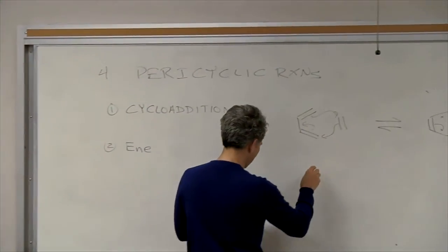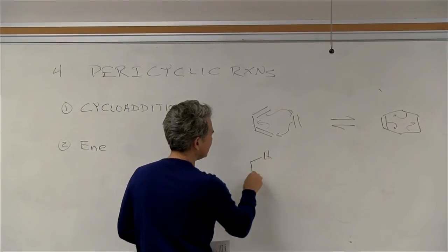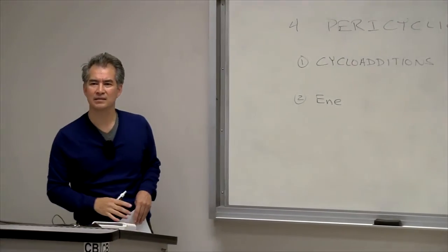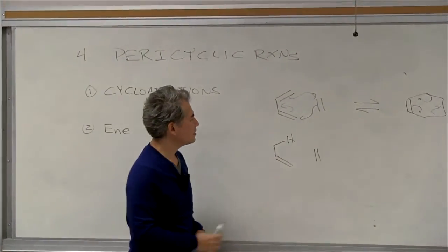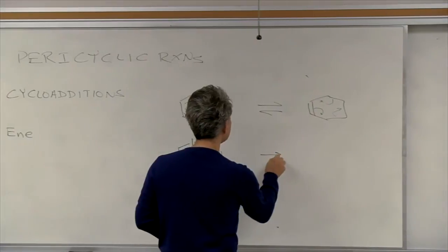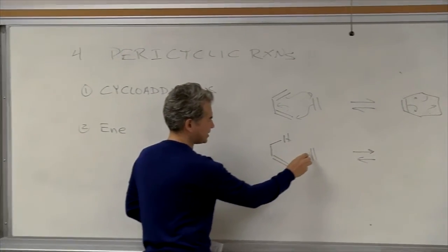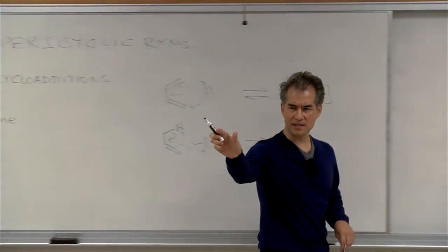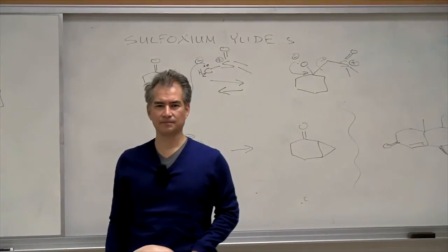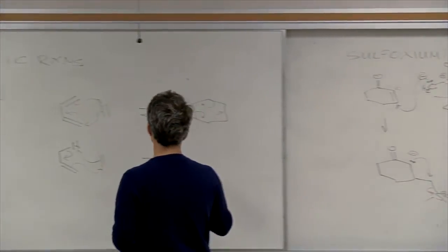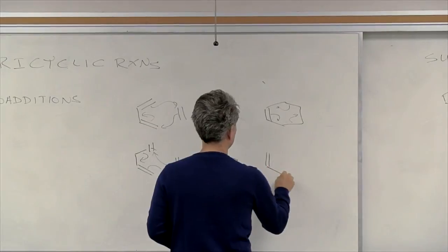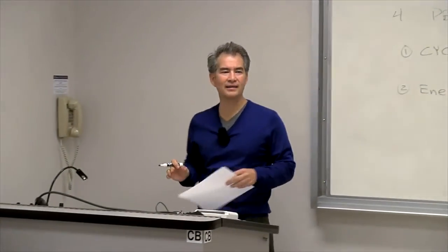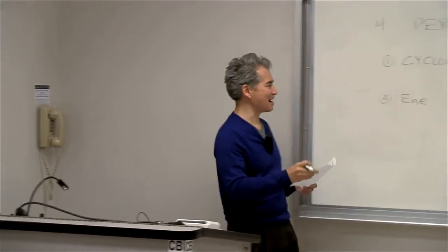The second type is called an ene reaction. All I do is replace one of the pi bonds in the diene with a sigma bond — not to carbon but to a proton. And I can push the arrows in exactly the same way: take this alkene, grab that proton, and push all around. All I've done is replace a single pi bond with a CH bond. We call that an ene reaction. And you can have retroene reactions — retroene reactions are actually more common than ene reactions.